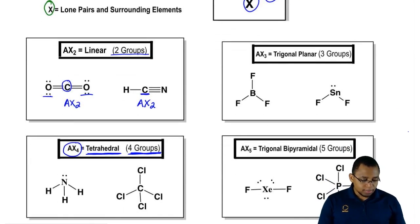Now AX3, this would mean that your central element is connected to three groups. Here we have boron which is A, our central element, and it's surrounded by three surrounding elements so it's AX3.